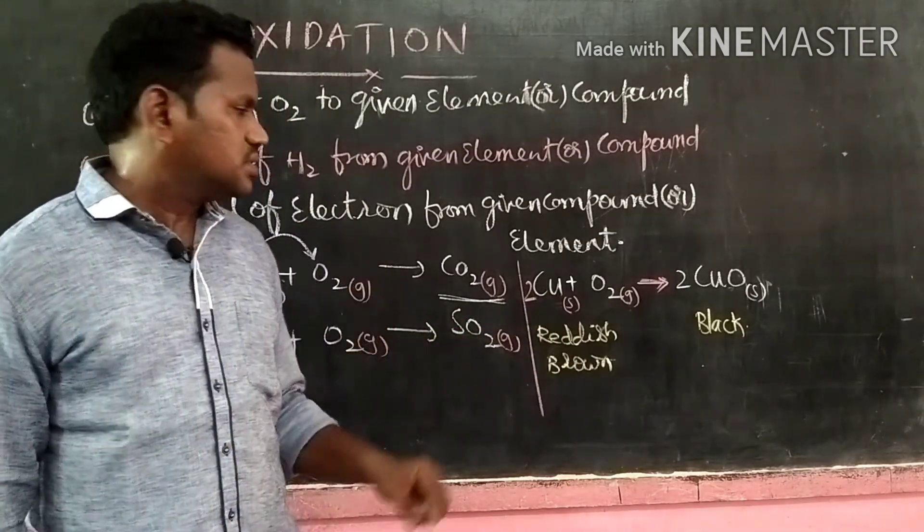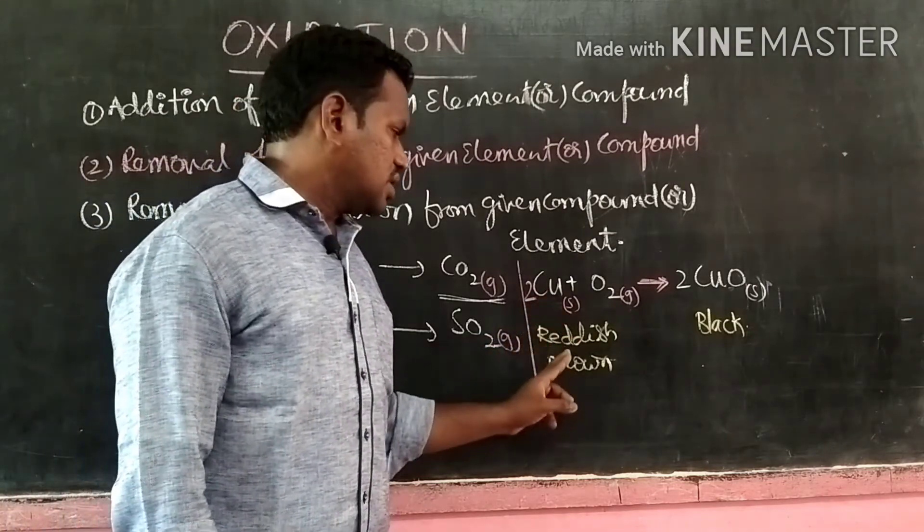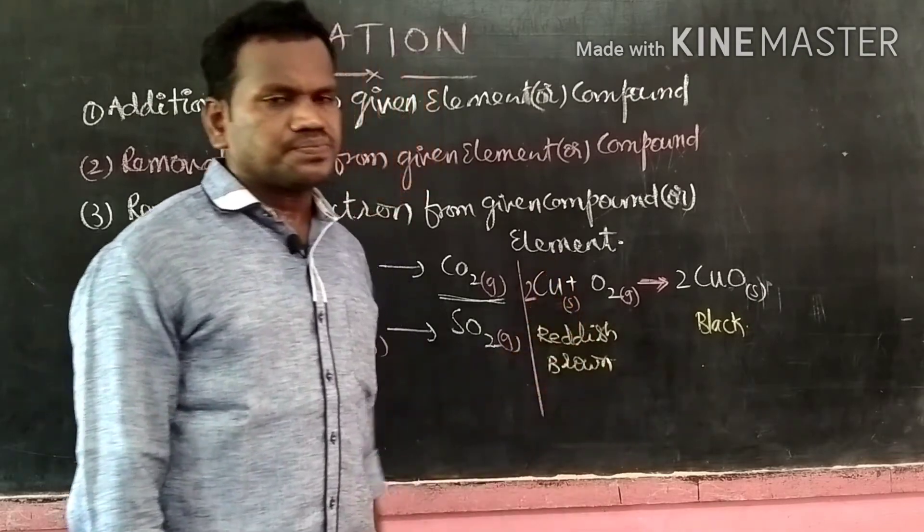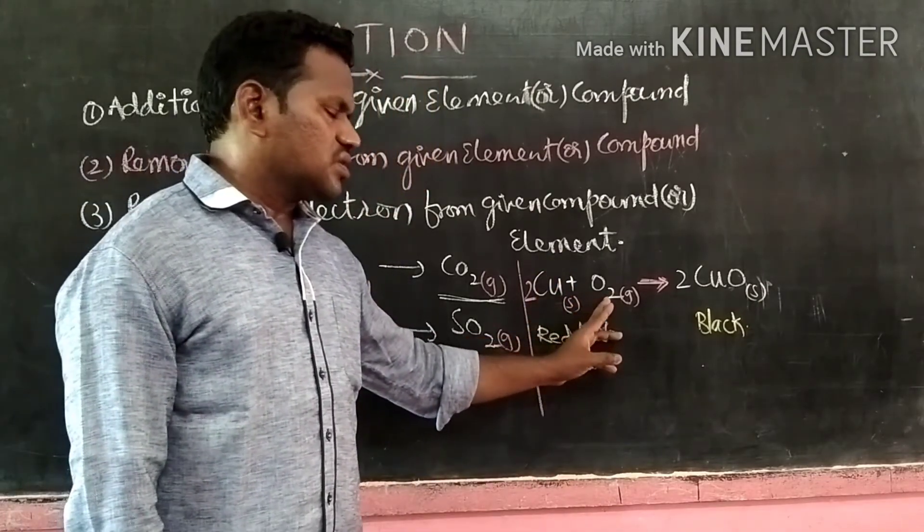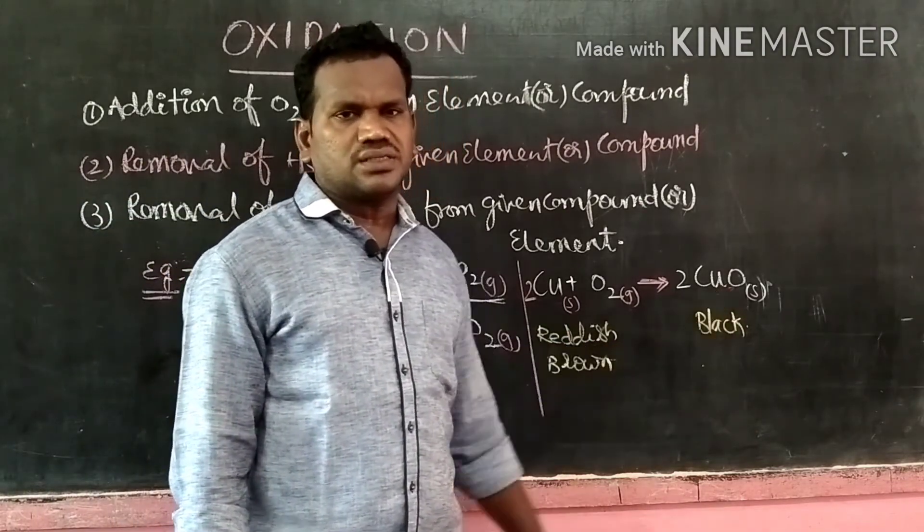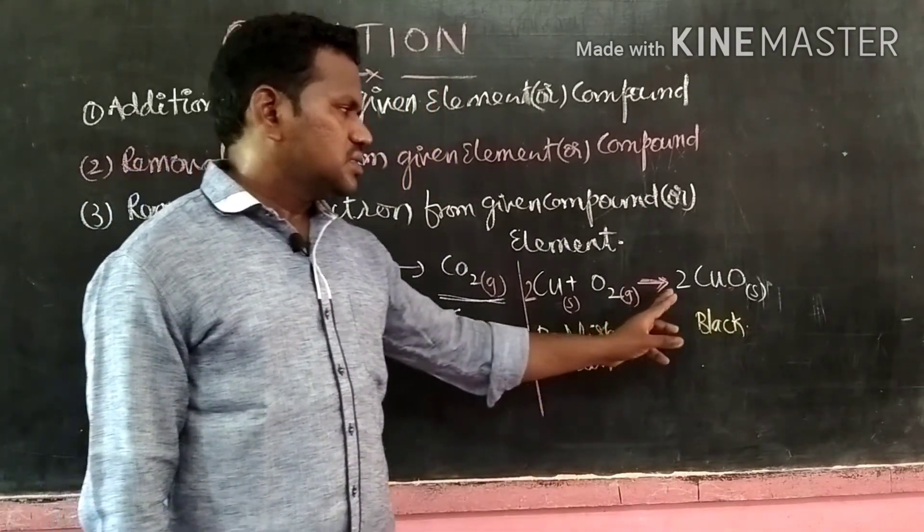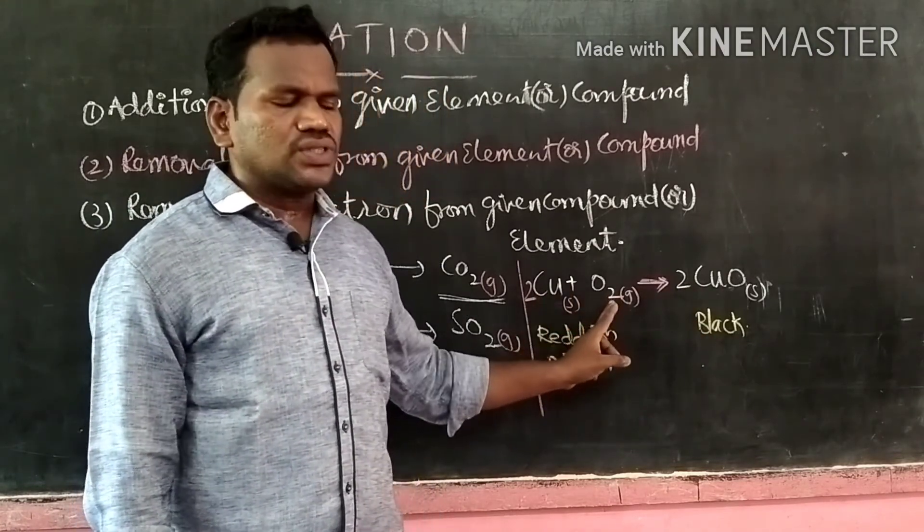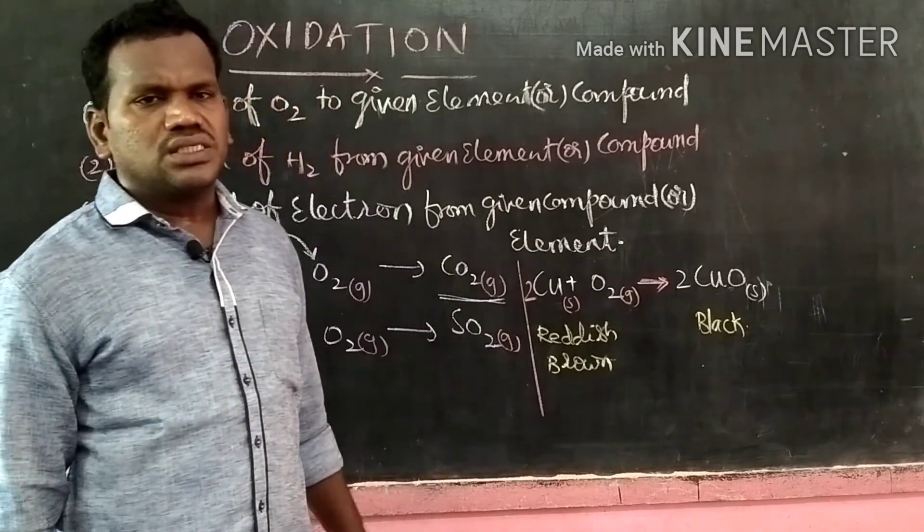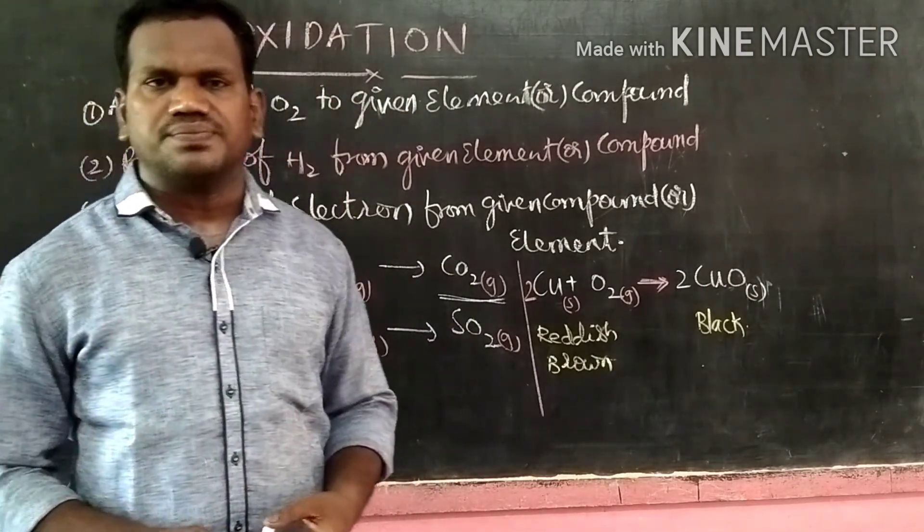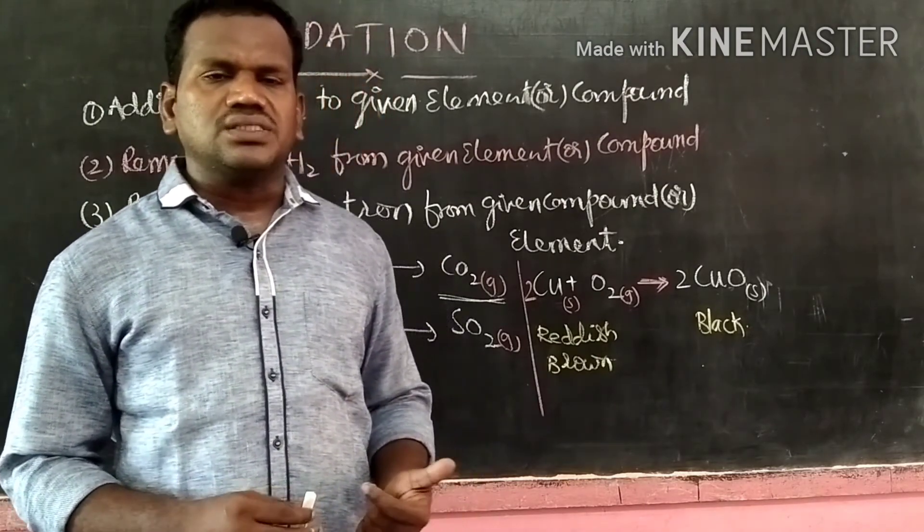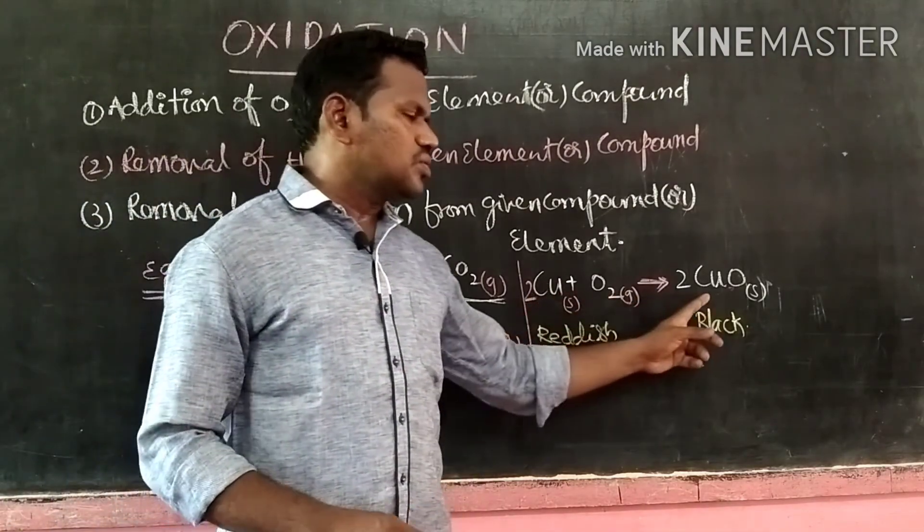Metal copper is a metal. We know that it is a reddish brown colored metal that reacts with oxygen to convert it into a black color copper oxide. That means here copper reacts with oxygen to form copper oxide. This is an example of oxidation reduction. Let us discuss the conversion of copper into copper oxide.